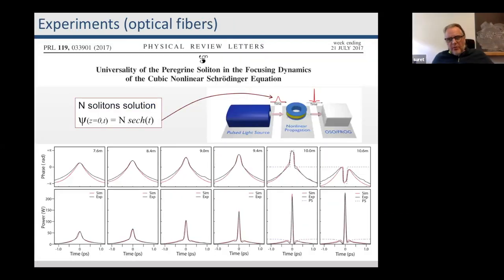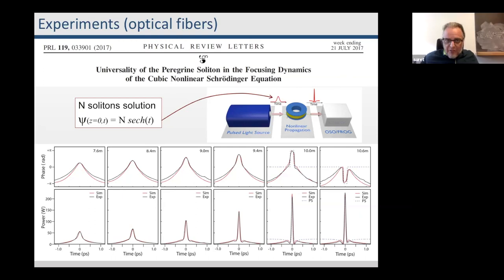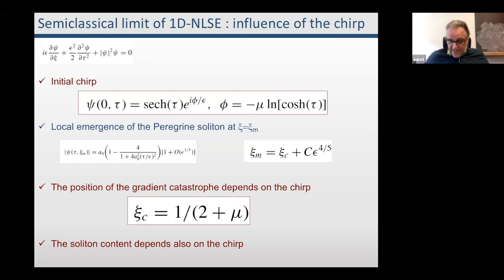A few years ago with the group of John Dudley, we performed experiments in optical fibers to look at this dynamical phenomenon. We start from a pulse, and when you propagate along the fiber, each column corresponds to a different size of the fiber. You see locally the emergence, the focusing of the large pulse and the emergence of this coherent structure that is extremely well fitted by the Peregrine soliton. In this experiment there is no phase at all, so the chirp is just a real one and there is no phase.